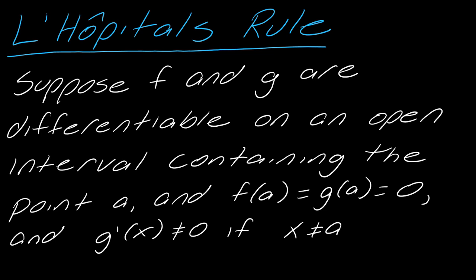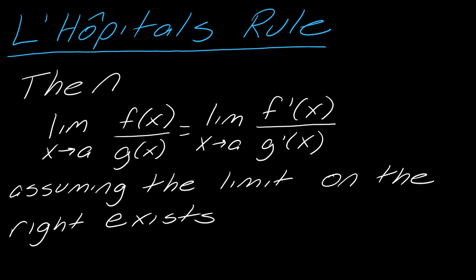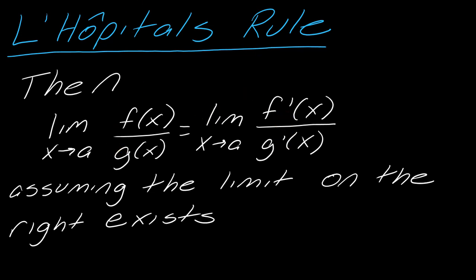The first thing we should do is restate what L'Hopital's Rule says. It says: suppose f and g are differentiable on an open interval containing the point a, and f(a) equals g(a) which equals zero, and g'(x) does not equal zero if x does not equal a. If those conditions hold, then the limit as x approaches a of f(x) over g(x) equals the same limit but taking the derivative of the top and the bottom function — assuming that limit on the right exists.